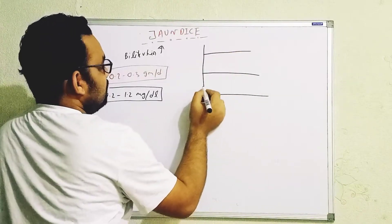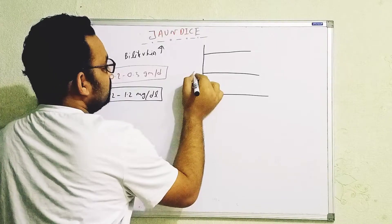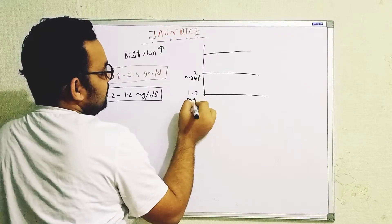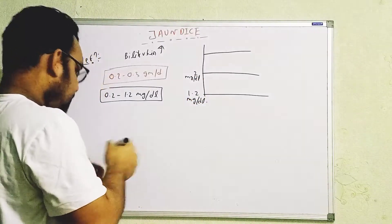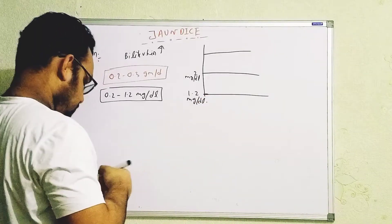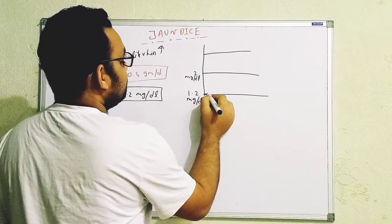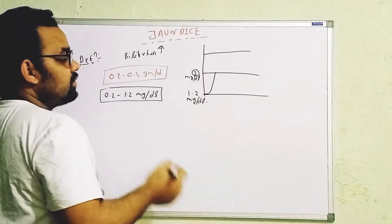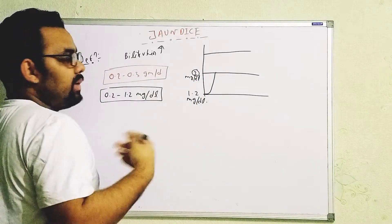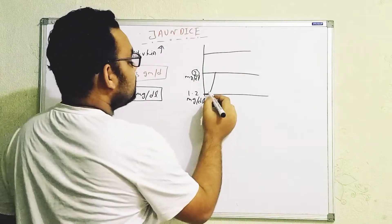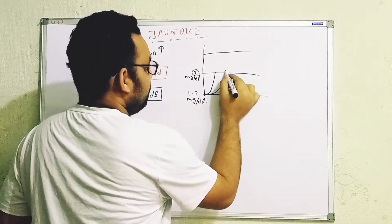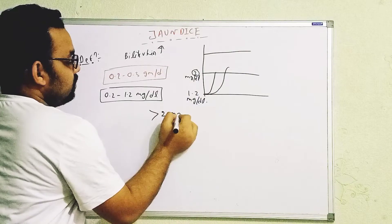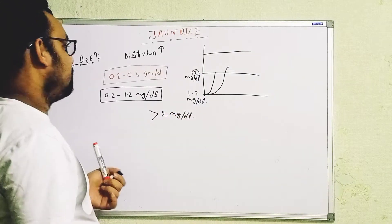If we look at a graph in terms of milligrams per deciliter, the normal range is 0.2 to 1.2 mg/dL. If the bilirubin level increases up to around 2 mg/dL, symptoms will appear but will be mild. However, whenever the value crosses and becomes greater than 2 mg/dL, we will see more pronounced types of symptoms.